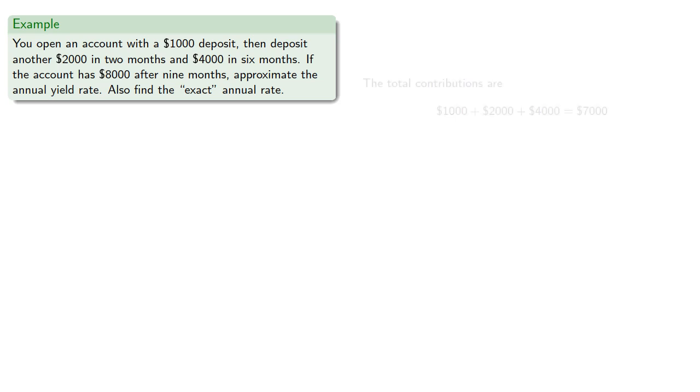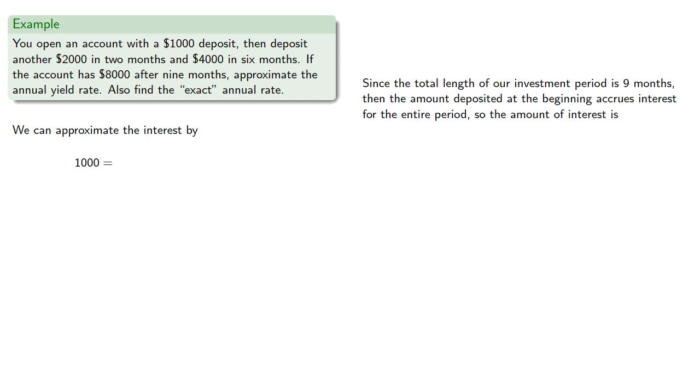The total interest earned is $1,000. Since the total length of our investment period is 9 months, the amount deposited at the beginning accrues interest for the entire period.